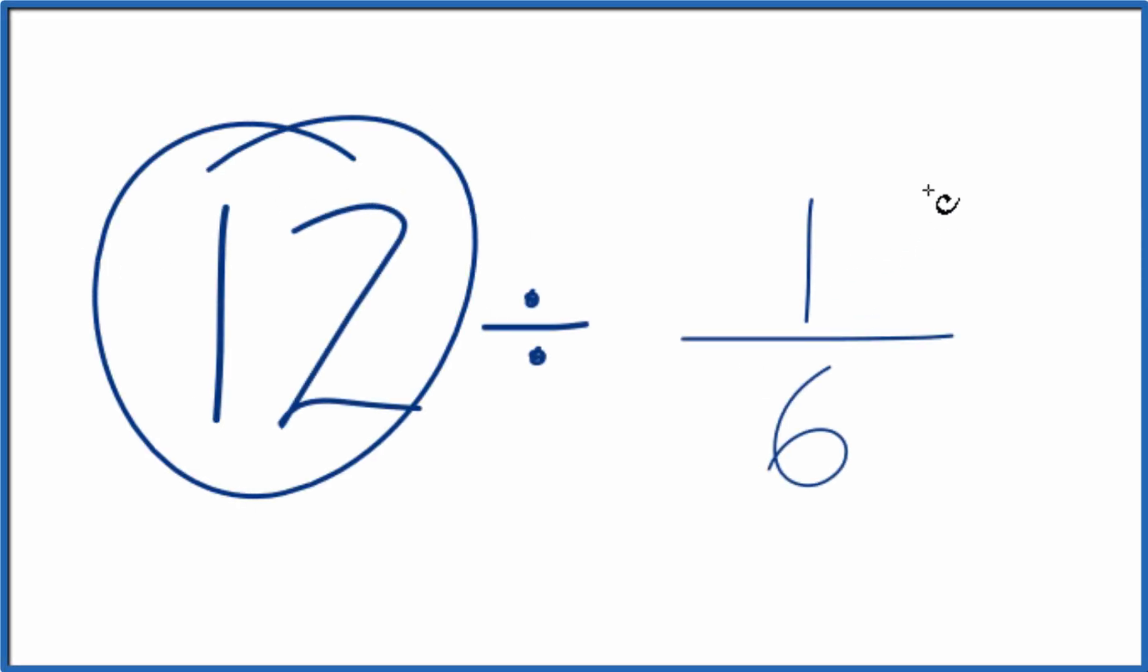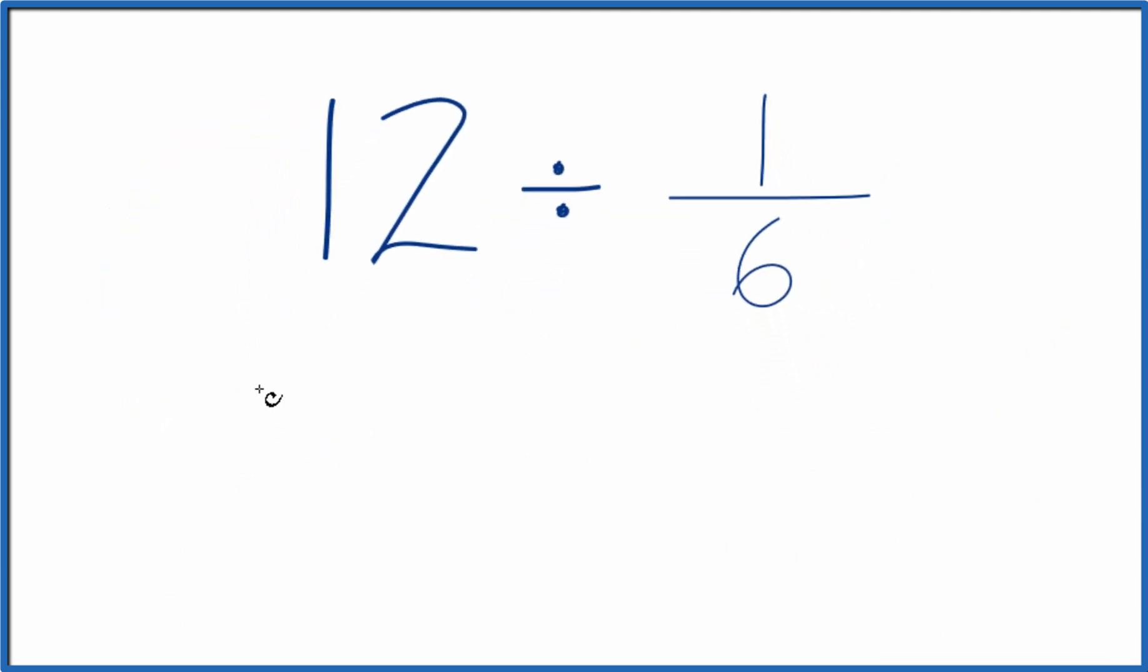Let's divide 12 by 1/6. Here's how we do it. So instead of 12, let's call this 12 over 1 because 12 divided by 1 is still 12. Now we have a fraction though.